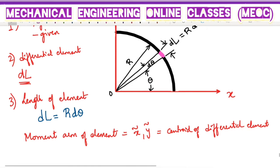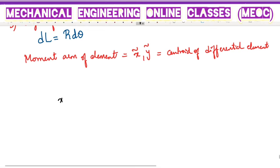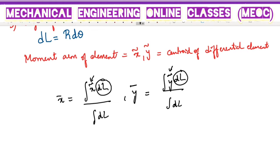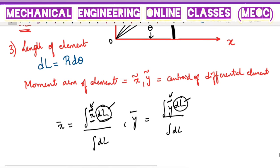If you remember the formula to find the centroid of a one-dimensional element: X̄ = ∫X̃·dL / ∫dL. Similarly, Ȳ, the centroid of the entire 1D element, is given as ∫Ỹ·dL / ∫dL. So X̃ and Ỹ are the moment arms of the differential element. DL is nothing but R·dθ.